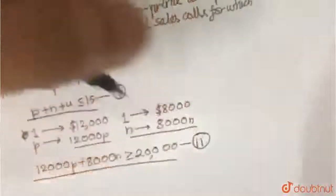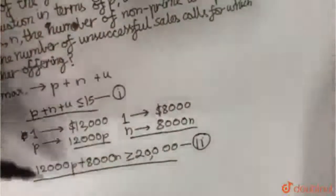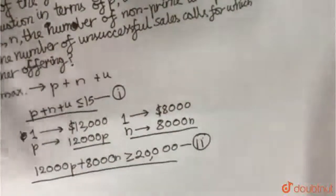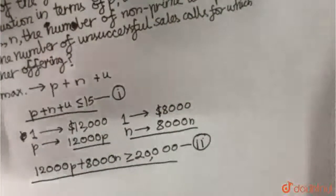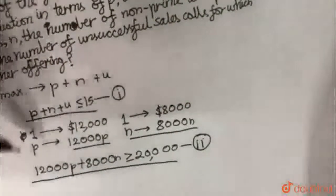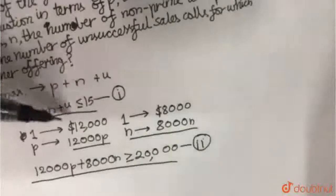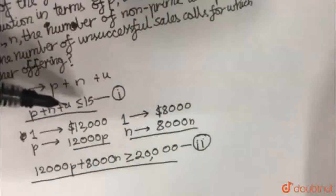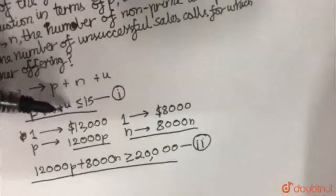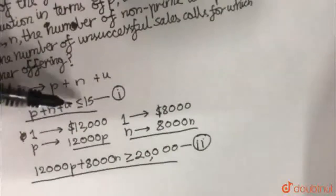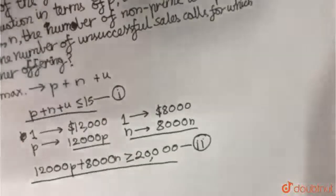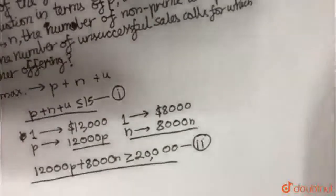These two inequalities are the set of equations we need representing the situation. Unsuccessful calls do not result in a sale, so we neglect that term in the revenue inequality. Thank you.